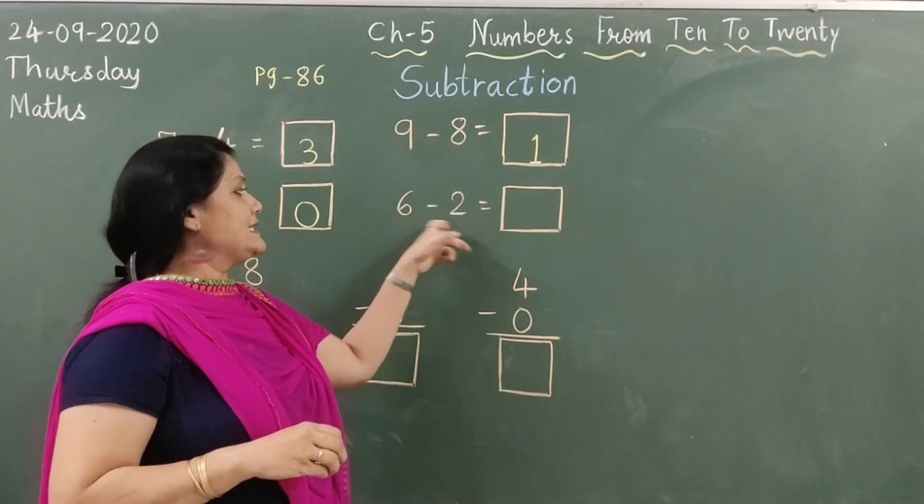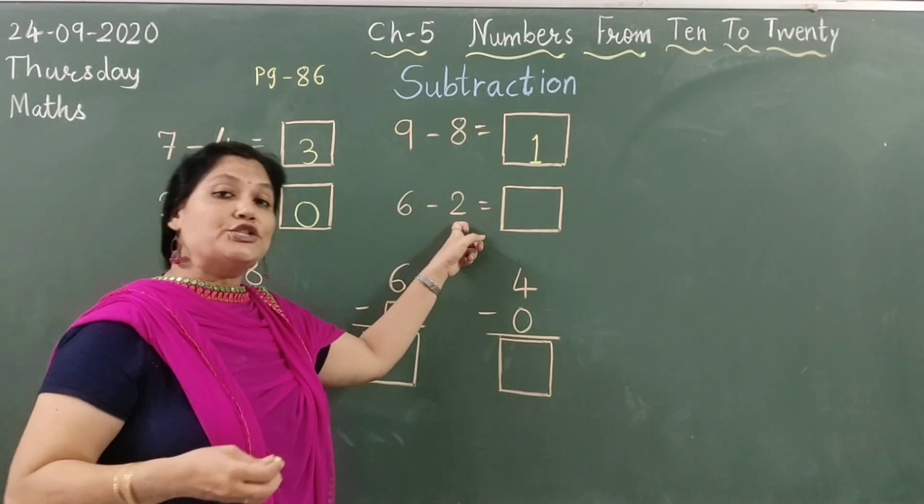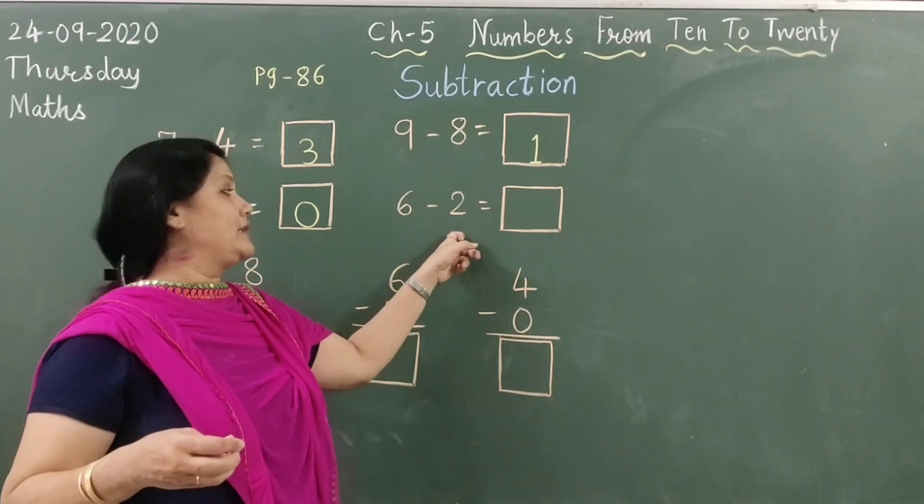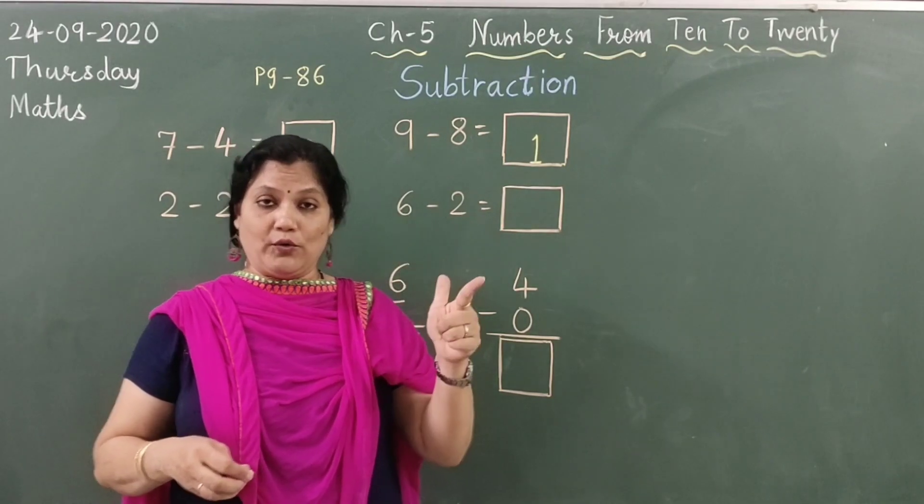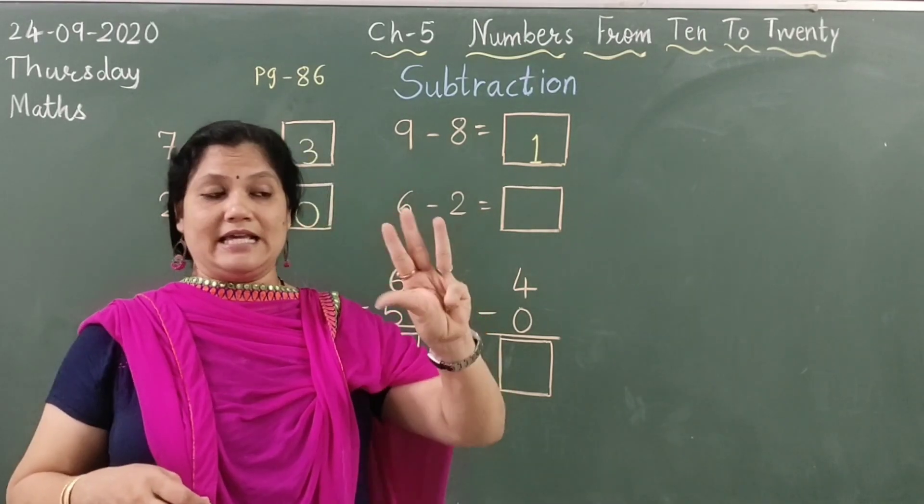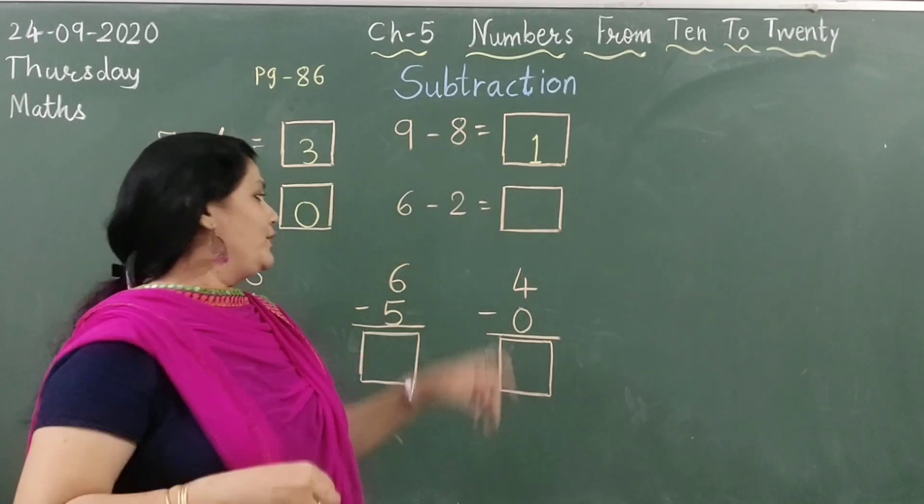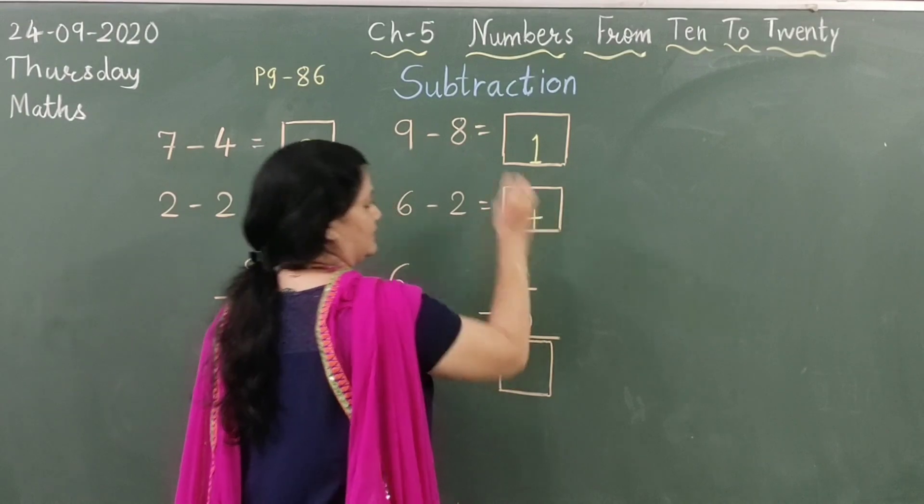Here, 6 minus 2. After 2 till 6 number will come. After 2 we have to start counting. What will come after 2? 3, 4, 5 and 6. So how many figures are there? 1, 2, 3 and 4. So 4 will remain here.